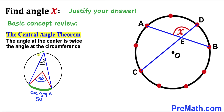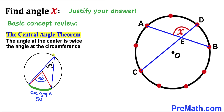Then this angle is going to be at the circumference, and moreover this angle at the circumference is going to be half of this angle at the center. Likewise, this angle is going to be at the circumference as well, and this is going to be half of this angle at the center.